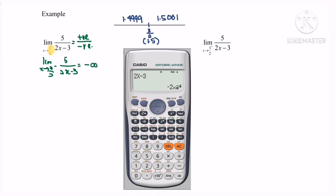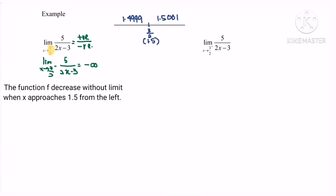Now referring to the calculator, we key in the function, then using the calculate function, we key in the value approaching 1.5 from the left, which is 1.4999. We can see there is a value of approximately negative 25,000, confirming negative infinity. The function f decreases without limit as x approaches 3/2 from the left.